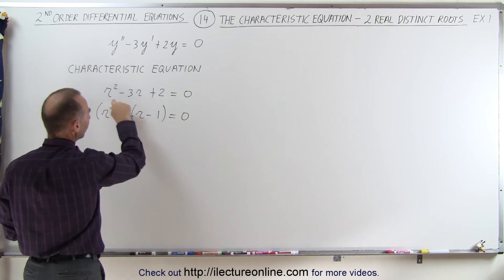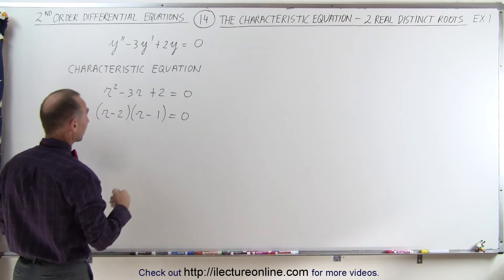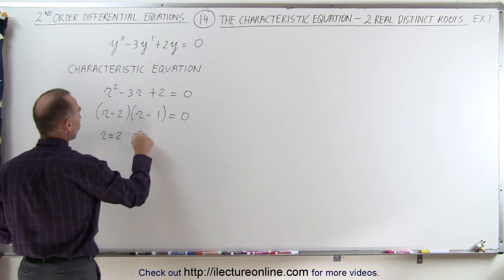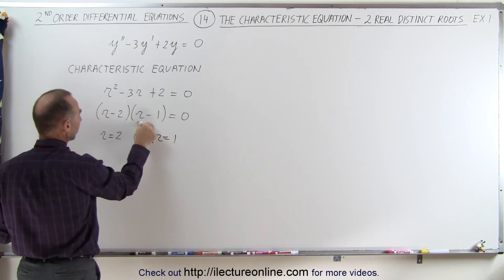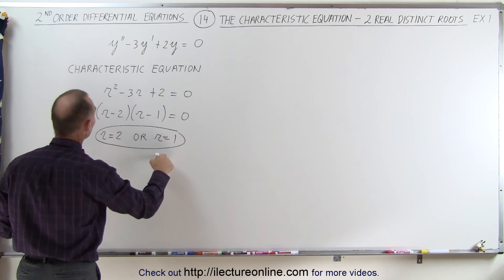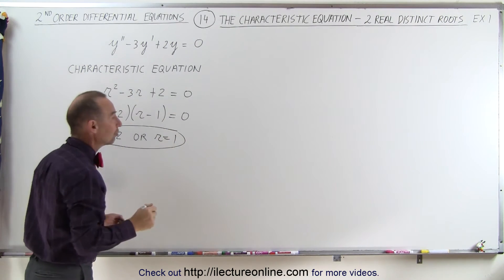When we multiply this out, we get back the original equation. This means that either r = 2 or r = 1, because when we multiply we get 0. So these are the two solutions to the characteristic equation.